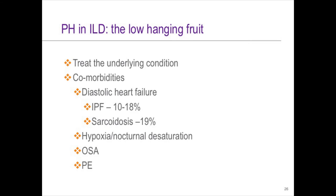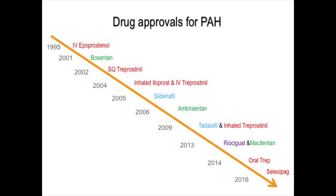Moving on to treatment. The low-hanging fruit: treat the underlying condition. Not to say that antifibrotics or other medications for ILD are going to affect the PH, but nonetheless we should treat the underlying condition. Comorbidities are especially important because we're dealing with an elderly population in IPF, and the prevalence of diastolic heart failure or HFpEF is around 10 to 20%. If folks are reticent to get a right heart cath, maybe the wedge will be 22 — we can give them some Lasix and they'll do better. OSA patients with IPF have a very high prevalence of OSA and tend to have a higher predisposition for thromboembolic events as well.